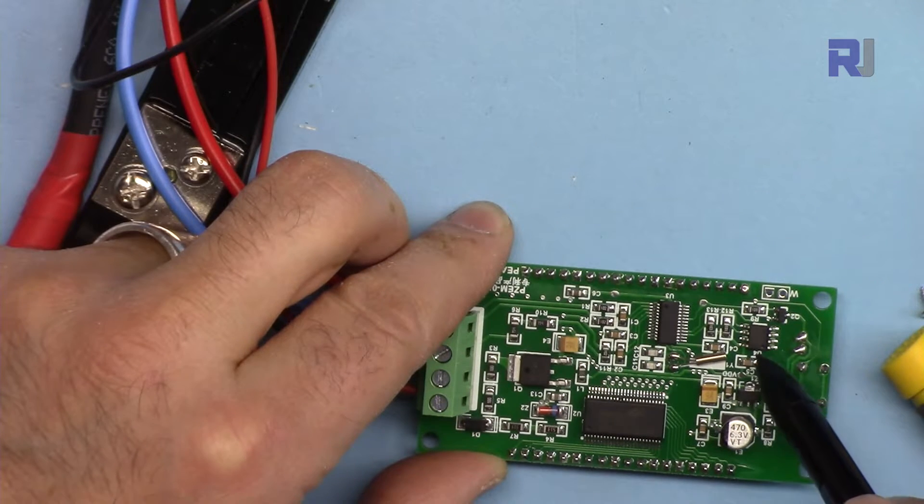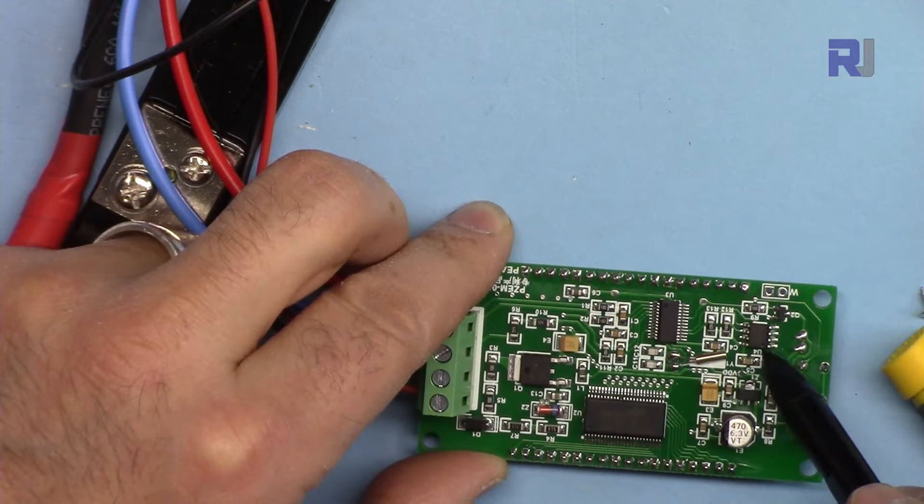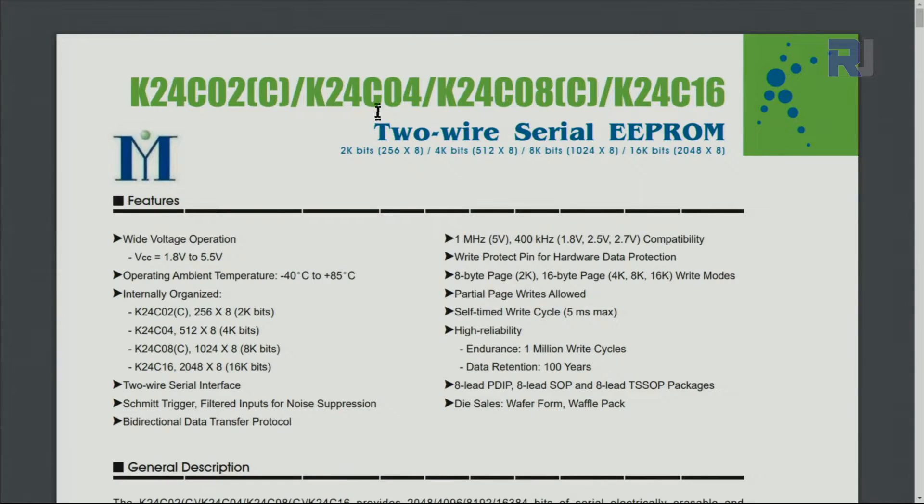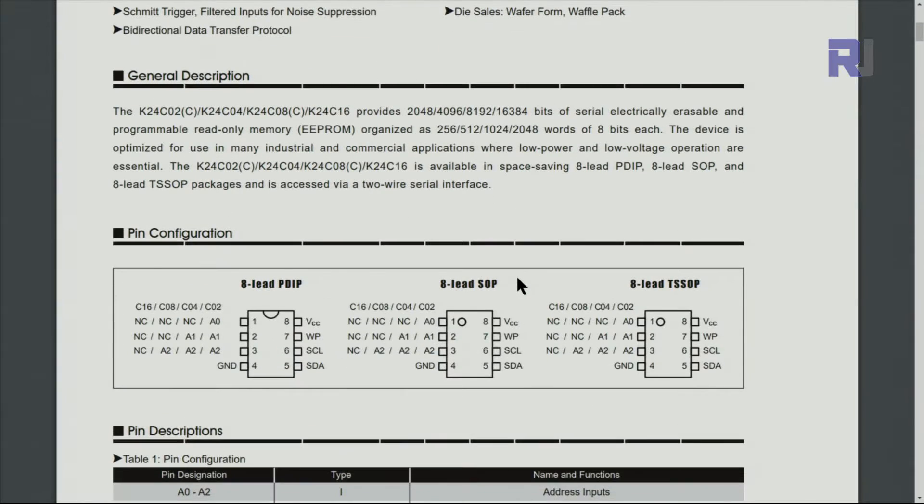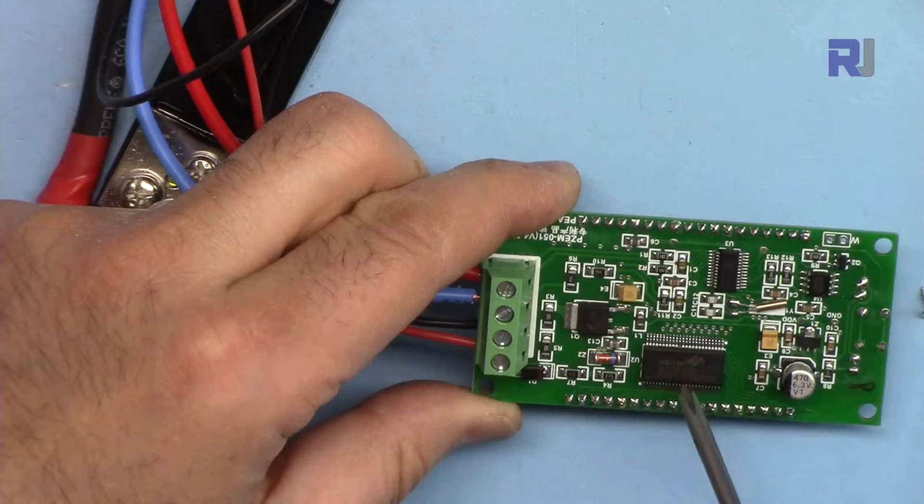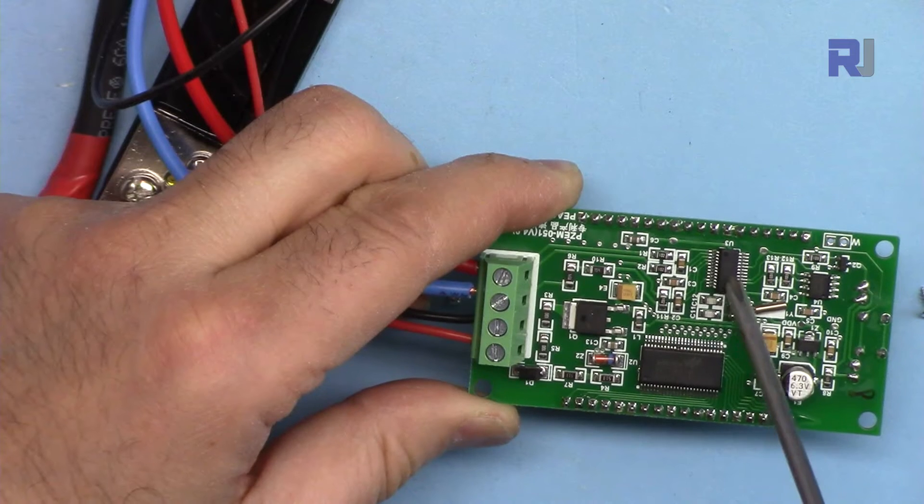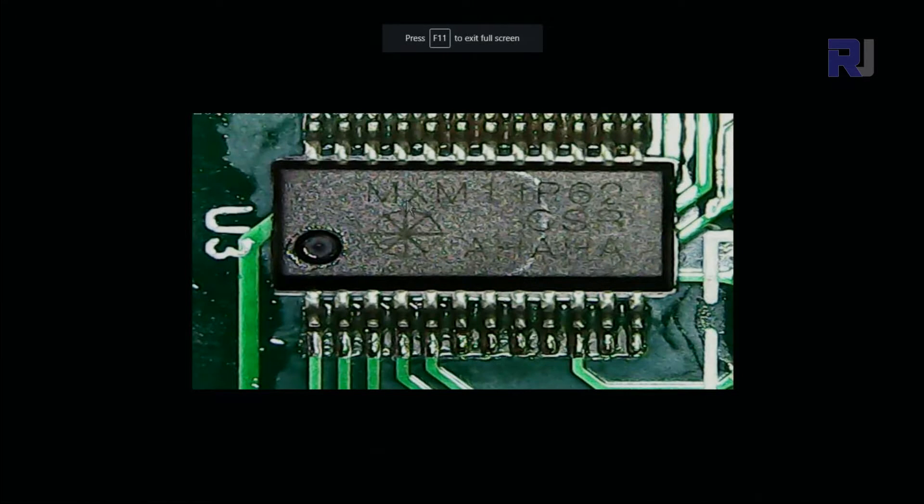This is a K24C02, this is a two-wire serial EEPROM. Here is the datasheet. This is the model that is used, the chip that holds the settings like energy consumption, type of shunt resistor and other information. I'll provide you the link. This chip is a display driver for the screen. Here is a chip, it's called MXM11P6-2. I was not able to find any information about this.